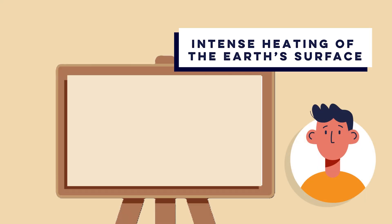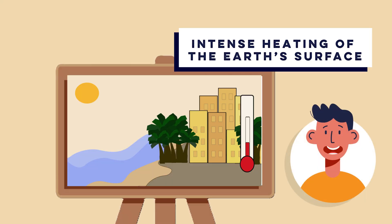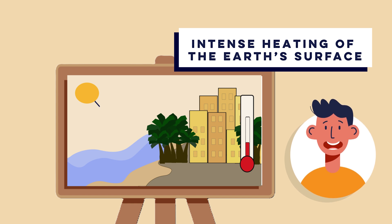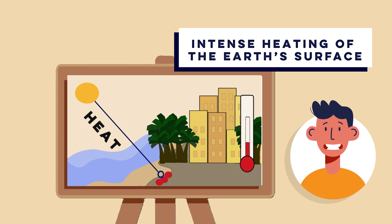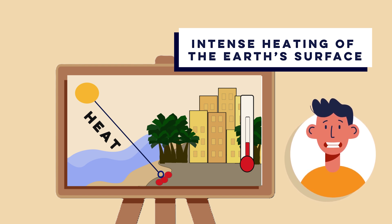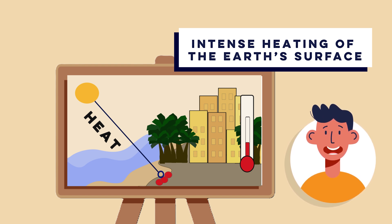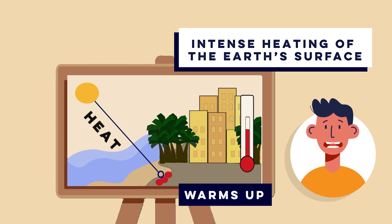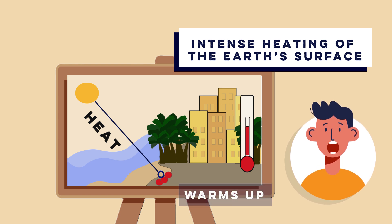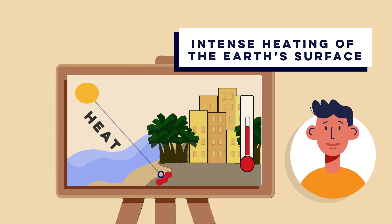Step one is intense heating of the earth's surface. Convectional rainfall occurs when the sun heats the earth's surface, particularly in tropical regions and during summer in temperate zones. This intense heating warms up the air near the surface.